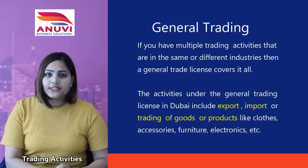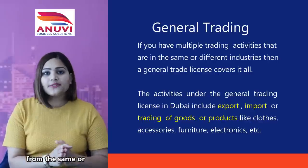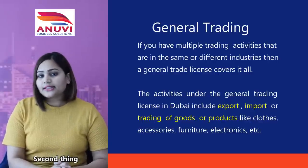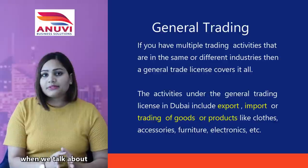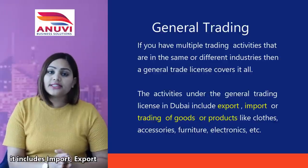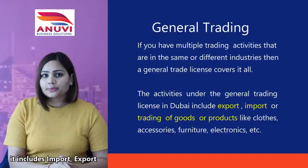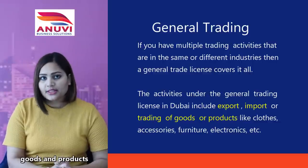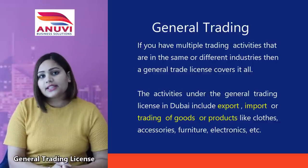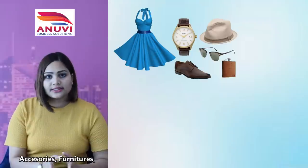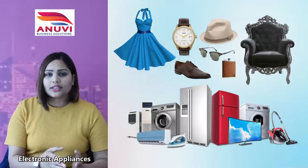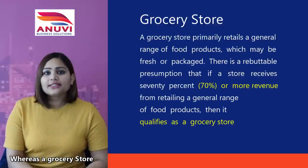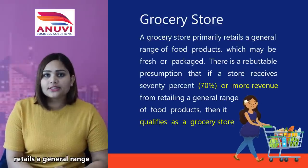For general trading, if you have multiple trading activities which fall from either the same or different industries, a general trading license covers it all. The general trading license includes import, export, and international trade of goods and products. Basically, it covers items like clothes, accessories, furniture, and electronic appliances.